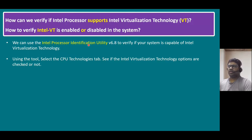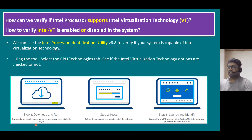Downloading this utility is pretty simple and straightforward. You can Google 'Intel Processor Identification Utility' and find the direct link, or I will provide the direct download link in the video description. The installation is straightforward — download from the Intel website, install and launch the utility, then identify whether your CPU supports VT technology or not.